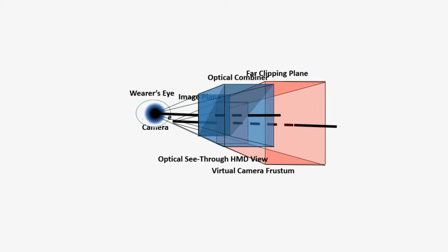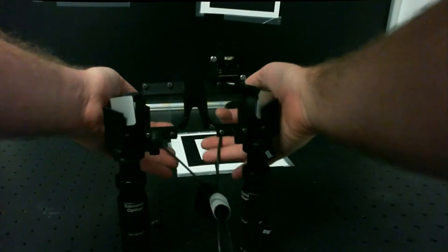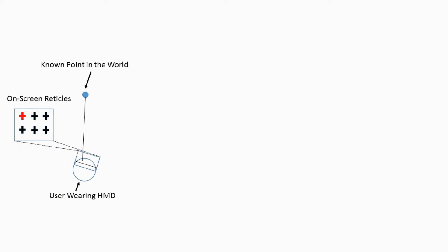Proper calibration will result in correctly registered on-screen objects and will increase the immersiveness of the augmented reality application. The single point active alignment method, or SPAM calibration method, will be used for this demonstration.